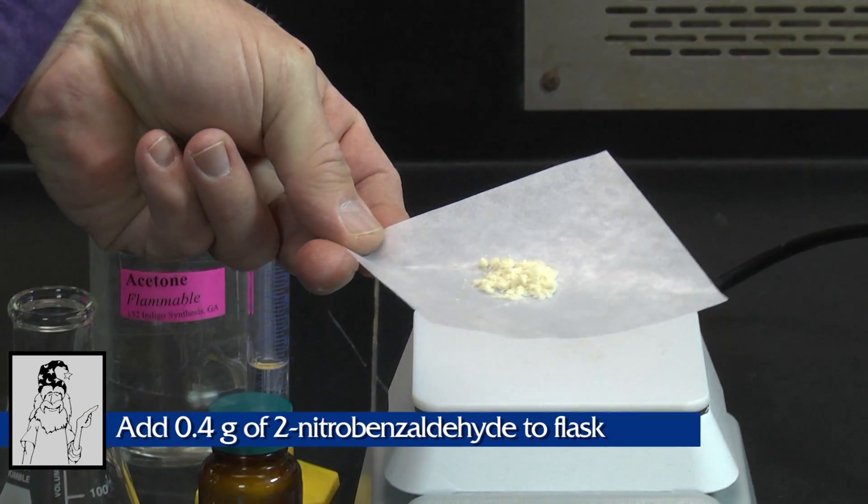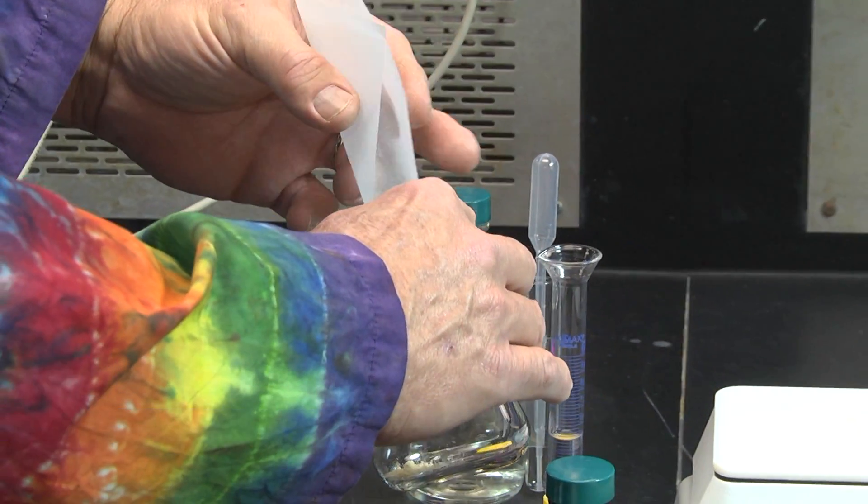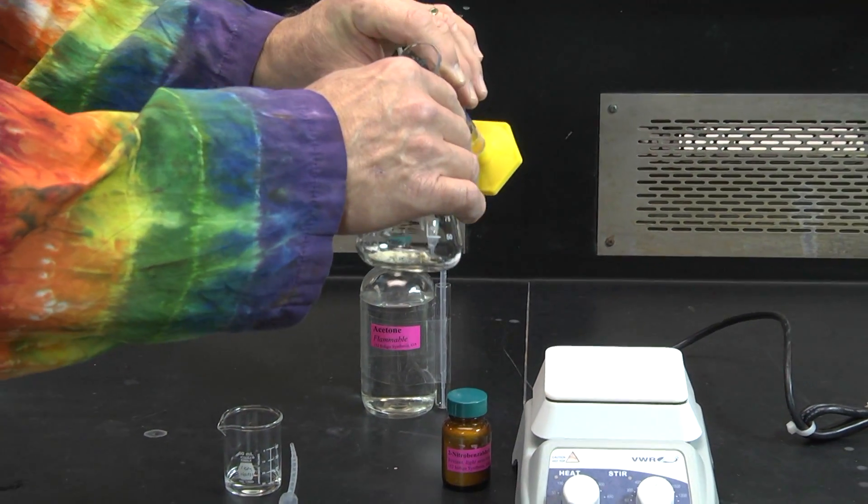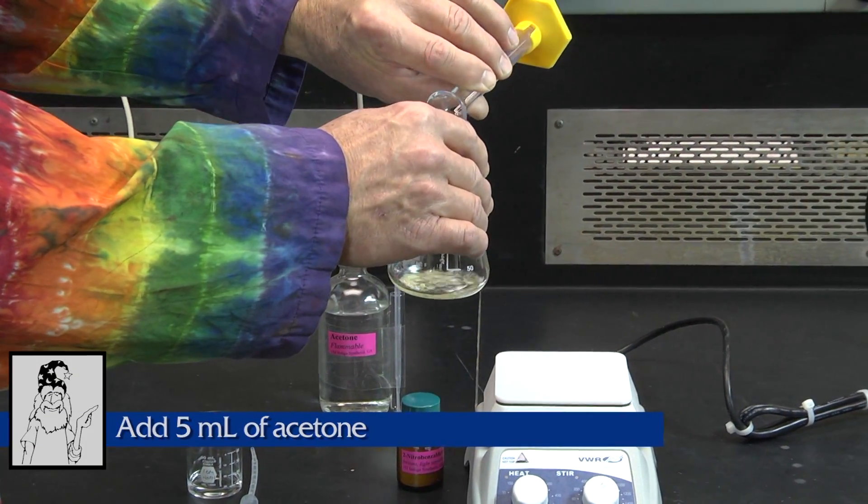Put the 2-nitrobenzaldehyde in an appropriate flask. With swirling, add the acetone. Note that the solid will dissolve.